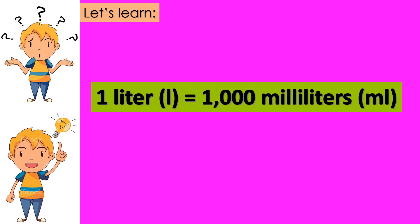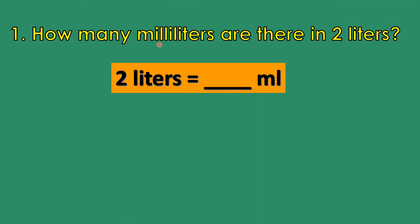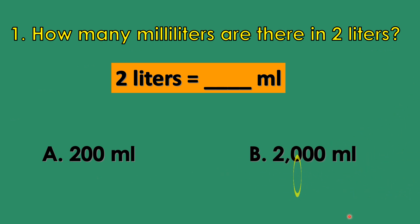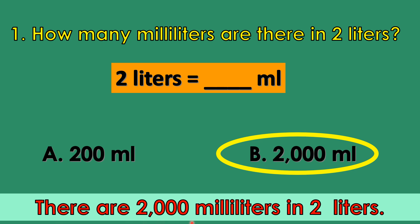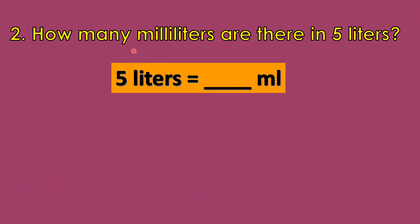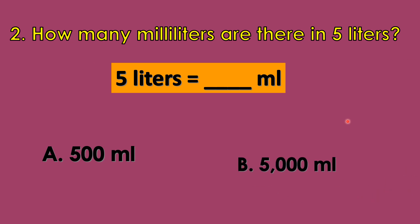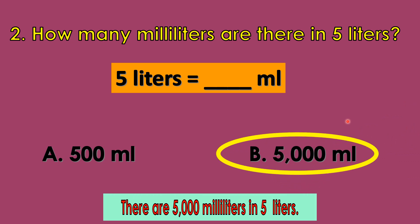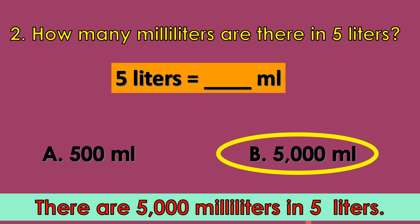Students, let's learn! 1 liter is equal to 1,000 milliliters. Again, 1 liter is equal to 1,000 milliliters. How many milliliters are there in 2 liters? A. 200 milliliters. B. 2,000 milliliters. Very good! There are 2,000 milliliters in 2 liters. How many milliliters are there in 5 liters? A. 500 milliliters. B. 5,000 milliliters. Correct! There are 5,000 milliliters in 5 liters.